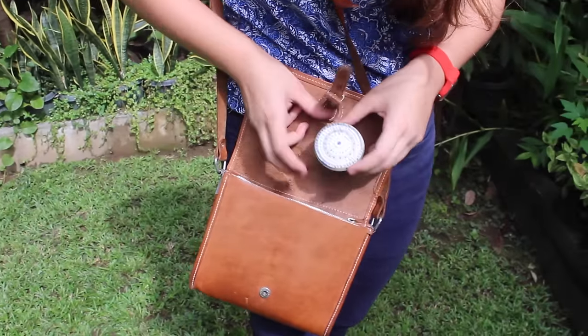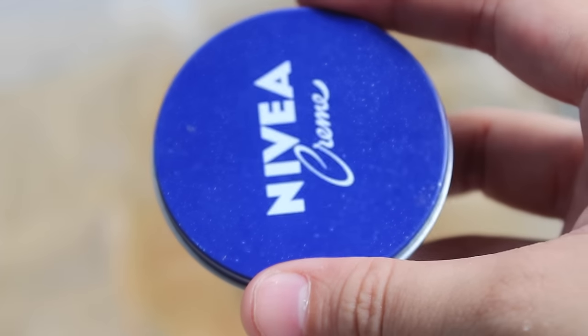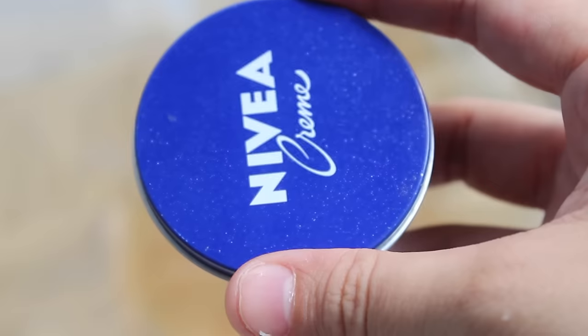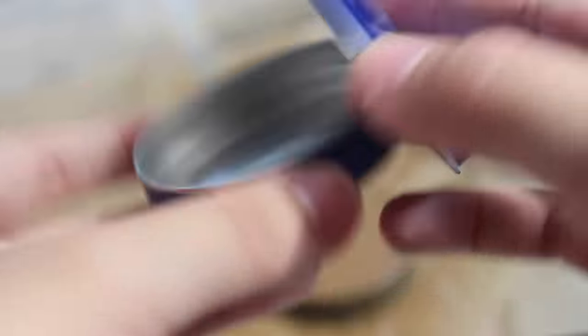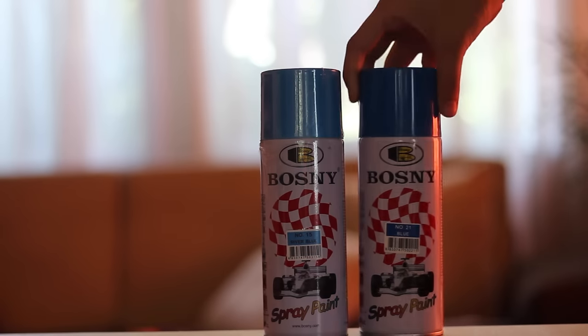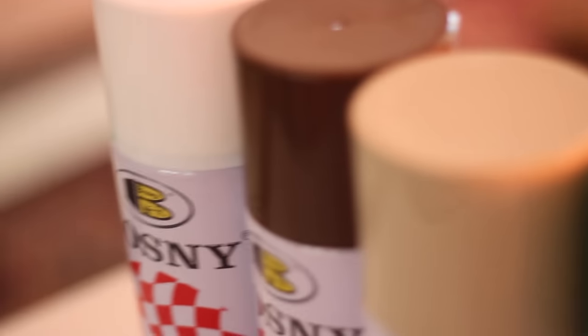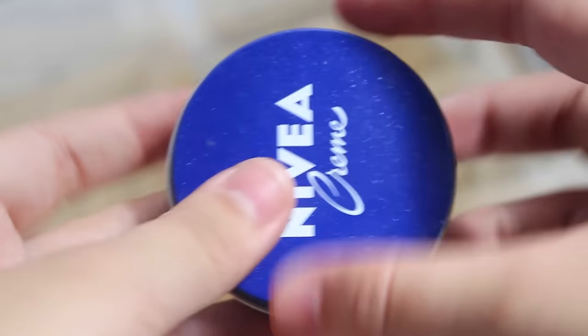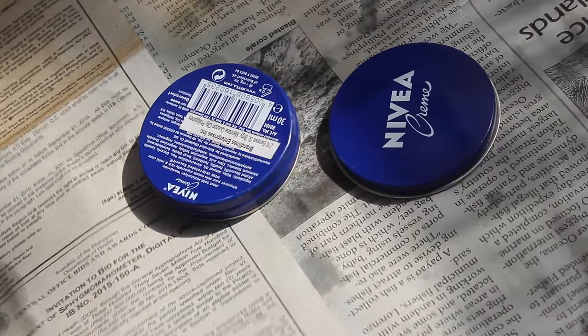For the next project, I'm going to be upcycling these little Nivea cream cans, and I love these because after you use them, you get this really nifty little container. But because it still has that blue Nivea brand on it, I thought it would be really cute if we could just upcycle this instead of throwing it away. So first, we're going to need spray paint, and I normally get these also in Daiso because you can buy them for like 50 to 60 pesos each, but you can also find them in Ace Hardware or True Value, all of these hardware stores, or even I think National Bookstore has them as well.